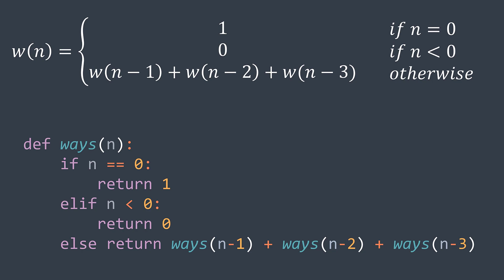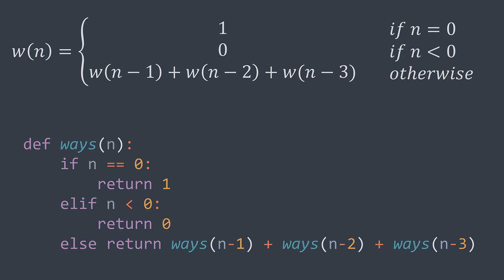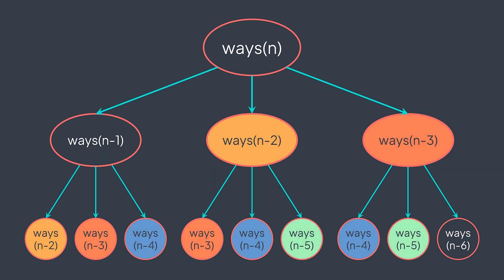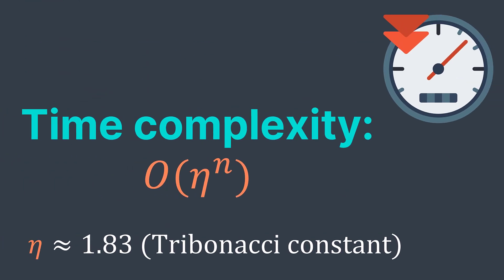If we've been able to solve it with recursion only, why would we need something called dynamic programming? To answer this question, let's go back to the recursion tree we've seen earlier. The problem with this recursion tree is that it contains repeated recursive calls — some calls are doing exactly the same thing. This slows down our solution, resulting in a time complexity of O(Tribonacci constant ^ n), because our function is close to one that calculates the nth Tribonacci number. Having an exponential time complexity is extremely slow, which is why finding a way to eliminate repeated work is necessary. That way is dynamic programming.